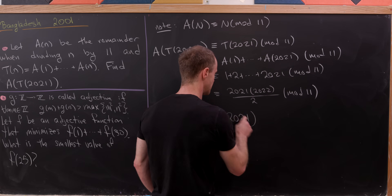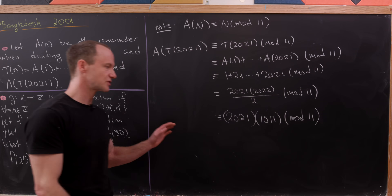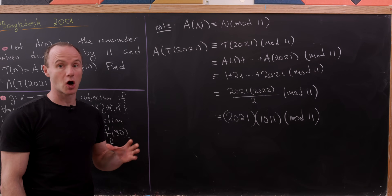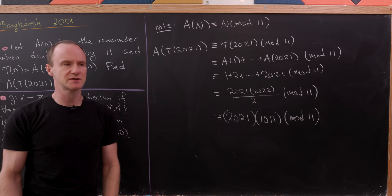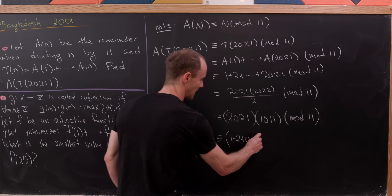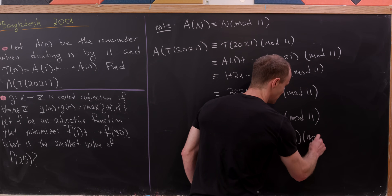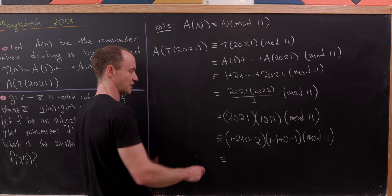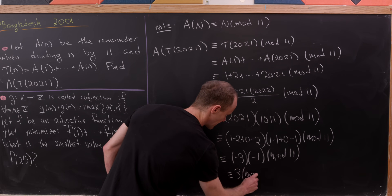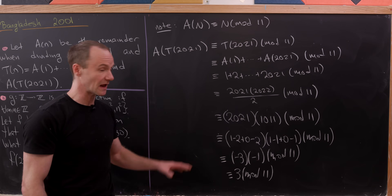This sum from 1 to 2021 equals 2021 times 2022 over 2, all mod 11. Dividing 2022 by 2 gives 1011, so we have 2021 times 1011 modulo 11. Now we reduce each number mod 11 using the alternating digit sum trick: for 2021 that's 1 minus 2 plus 0 minus 2, and for 1011 it's 1 minus 1 plus 0 minus 1. That gives minus 3 times minus 1 mod 11, which equals 3. So the answer is 3.